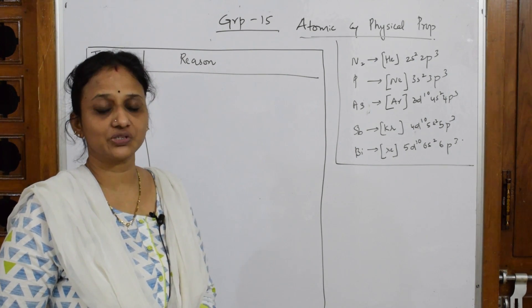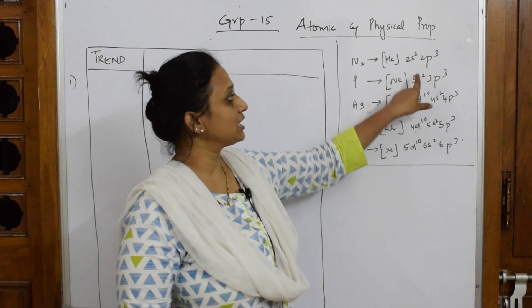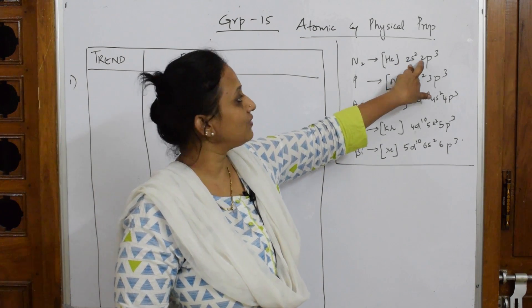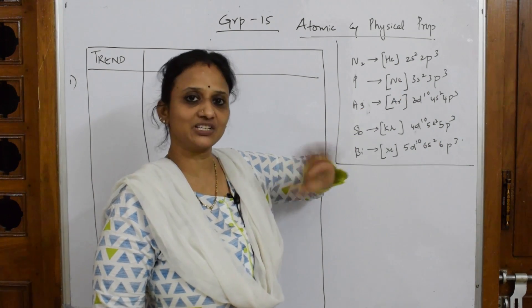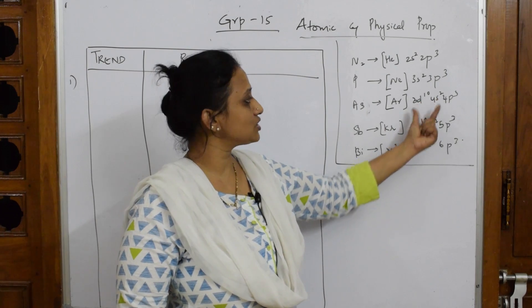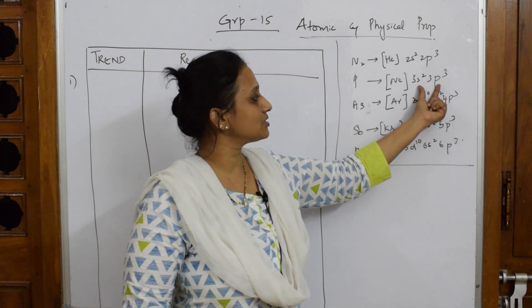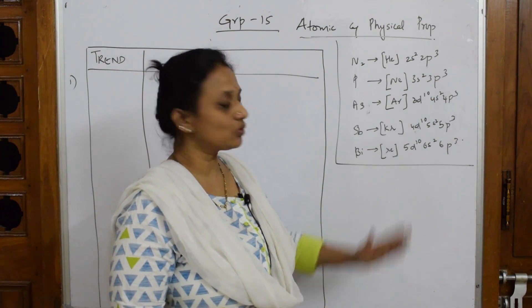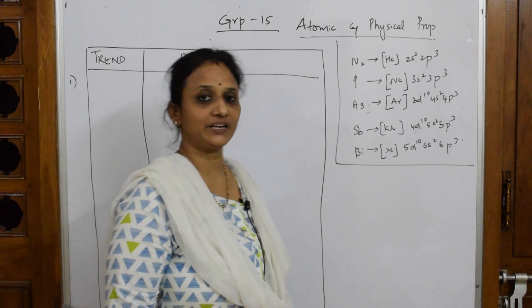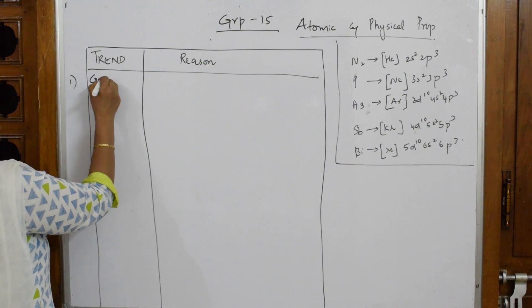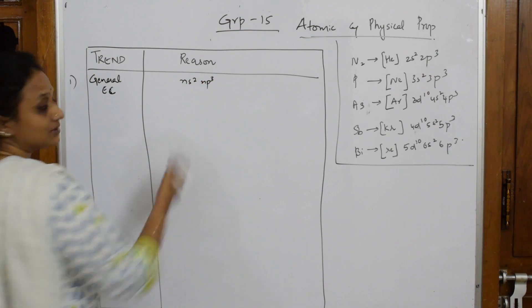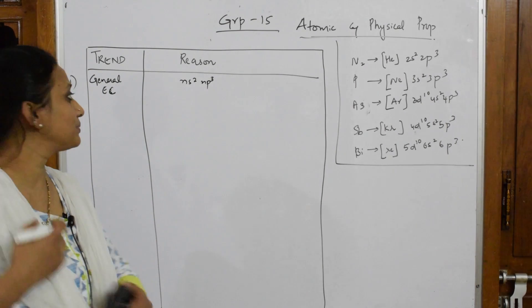When we learn the general electronic configuration trend, if we take 'n' as the principal quantum number, the general configuration is NS² NP³. This is because the NS² and NP³ parts are common across all group 15 elements. Further going down, they enter the d sub-shell — 3d¹⁰, 4d¹⁰, or 5d¹⁰ — but since it's a p-block element, the general configuration is written as NS² NP³.